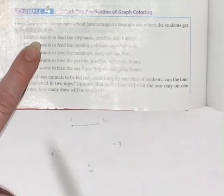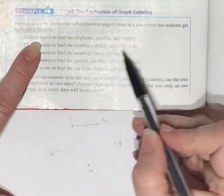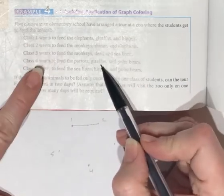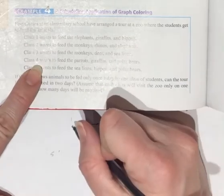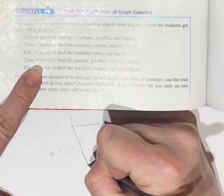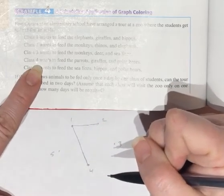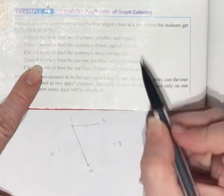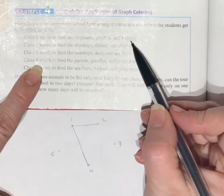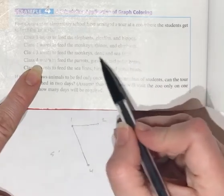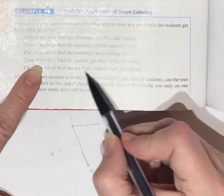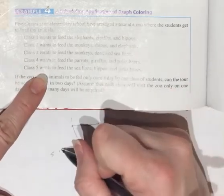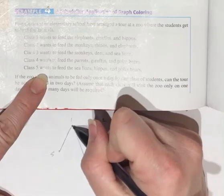Giraffes. Class one has giraffes. Class four has giraffes. So there's gonna be a conflict with class one and class four. And no more giraffes. Hippos. Class one has hippos. Class five has hippos. Conflict with class one and class five.